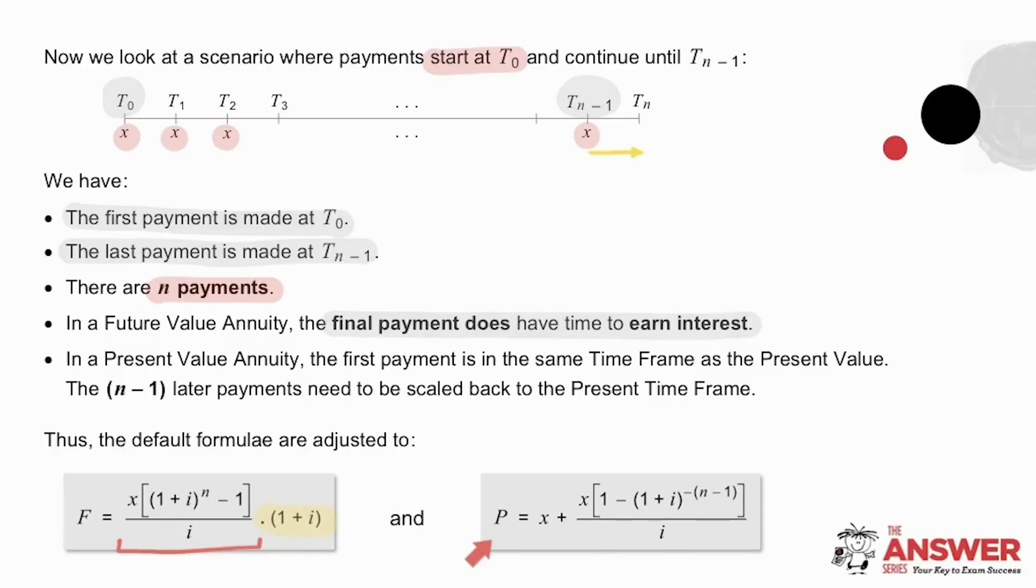Now if we look at the impact on the present value annuity formula, similar to before, let's start by ignoring the payment made at T0, then the remaining payments, of which there are N-1, can fit into the present value annuity formula. Then the payment made immediately has to be catered for by adding it in to get the overall amount involved.